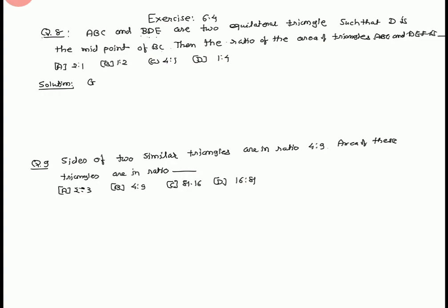Given that in triangle ABC, D is midpoint of BC, therefore BD equals half of BC. Therefore BC upon BD equals 2 upon 1.